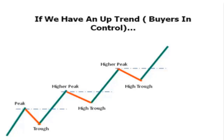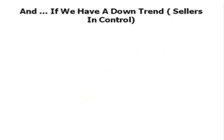So if the buyers are in control, which is more high probability — to buy it or short it? The more high probability trade would be to buy it, because the buyers are in control. Yes, we have small little pullbacks, but the overall direction is up. We're getting higher peaks and higher troughs, so we want to be staying on the buy side.